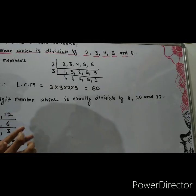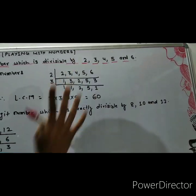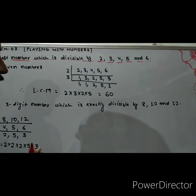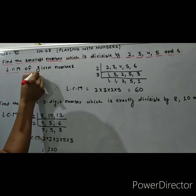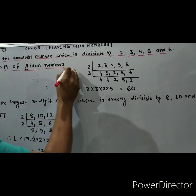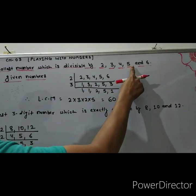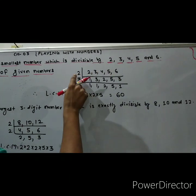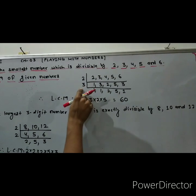So now we take the LCM of the given numbers in this type of question. Look at here student. LCM of given numbers: 2, 3, 4, 5 and 6. First we make the box like this by the long division method.